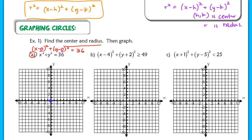The radius is not 36. Remember, this value is r squared, so the radius is 6. If I solve that I get positive or negative 6, but we throw out the negative because the radius is a distance. So we use 6.